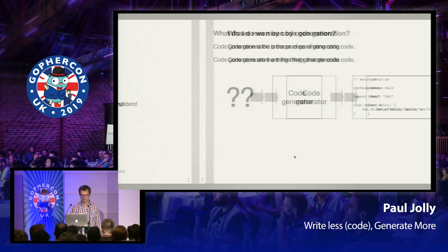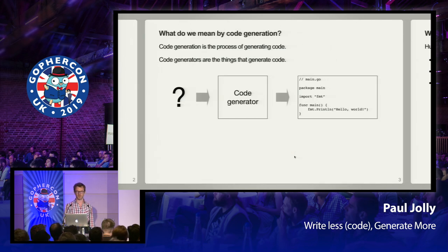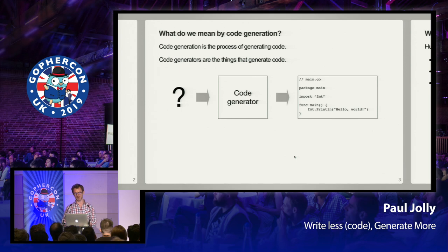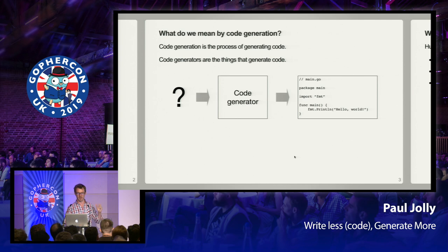So what do we mean by code generation? Code generation is the process of generating code, and code generators are the things that generate the code. We've got an input on the left, an output on the right-hand side, and the code generator sitting in the middle.